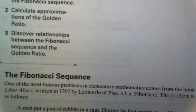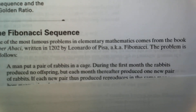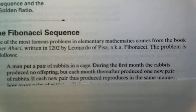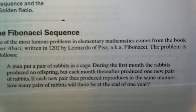The problem is as follows: a man put a pair of rabbits in a cage. During the first month, the rabbits produce no offspring, but each month thereafter produce one new pair of rabbits. If each new pair thus reproduces in the same manner, how many pairs of rabbits will there be at the end of one year?